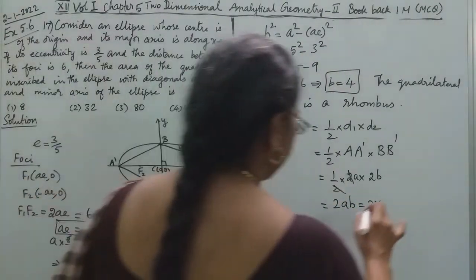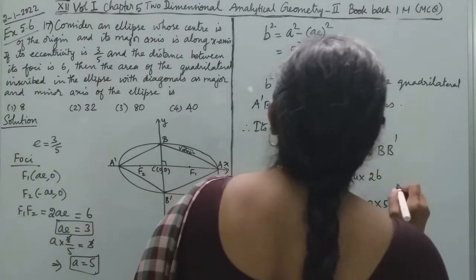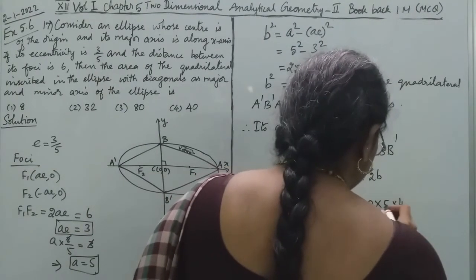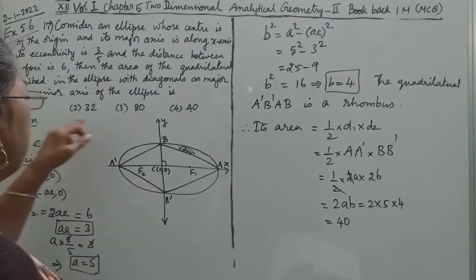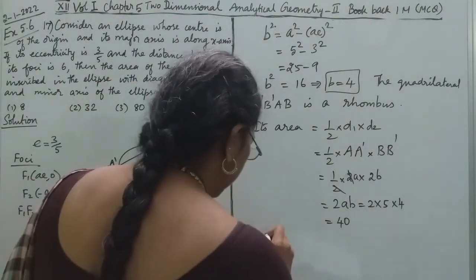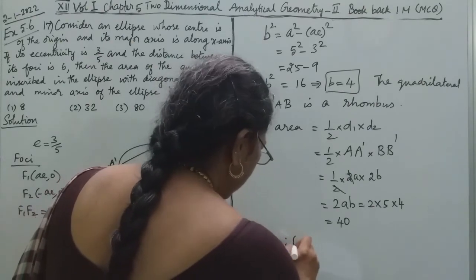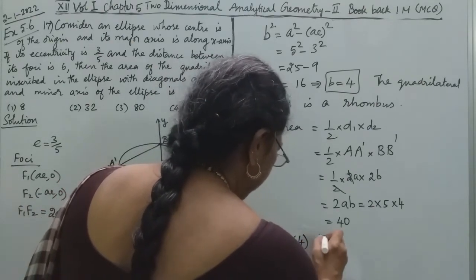2A is 5, B is 4. So 2 × 5 × 4 = 40. Therefore, the answer is 40, option 4.